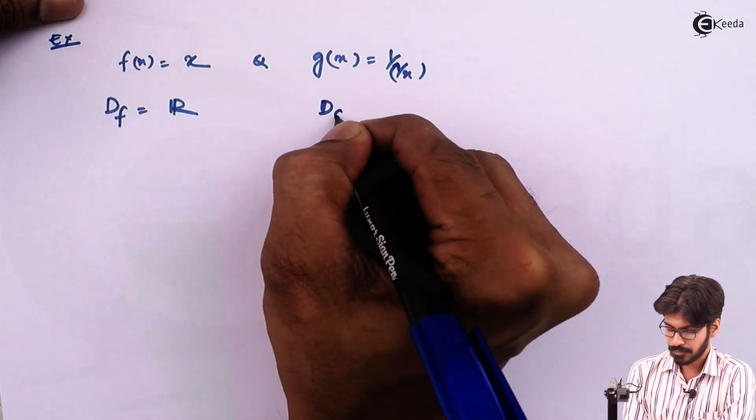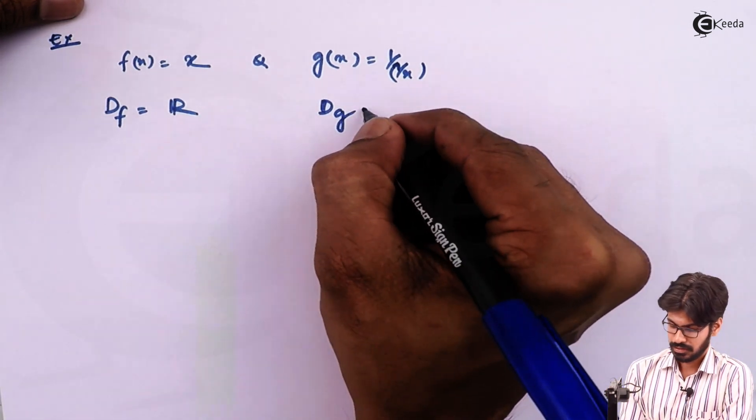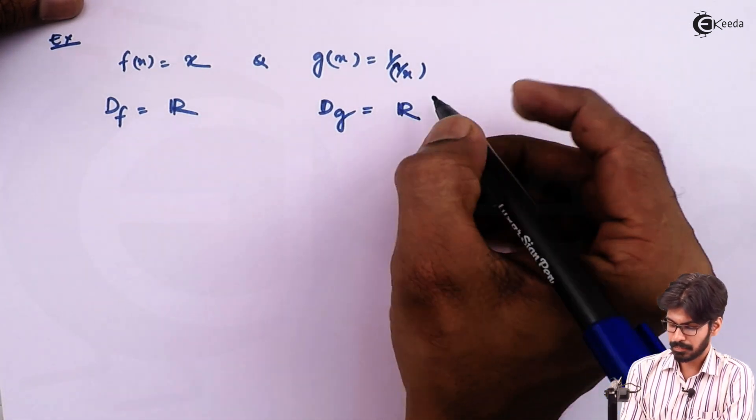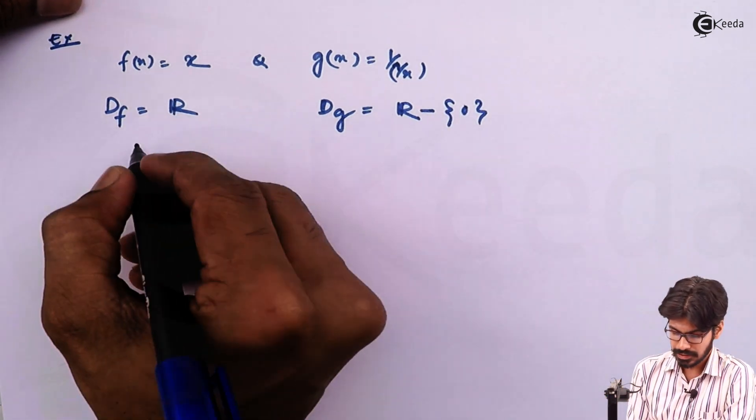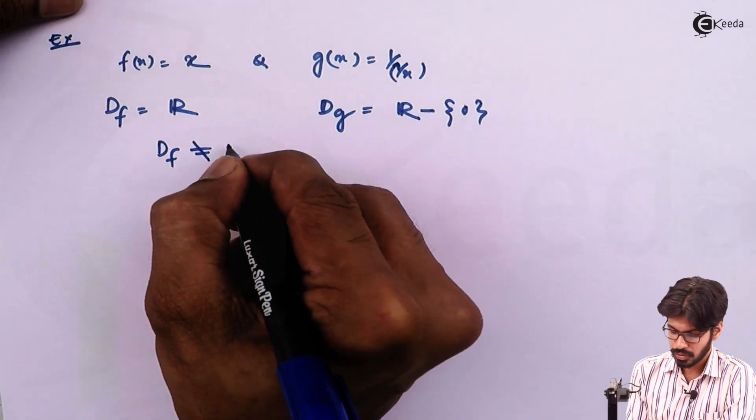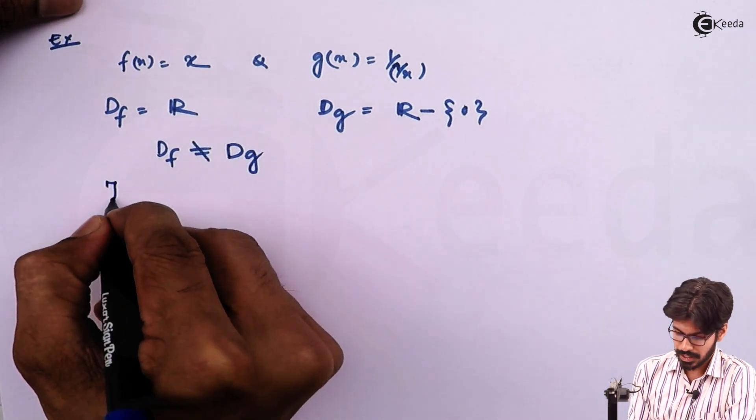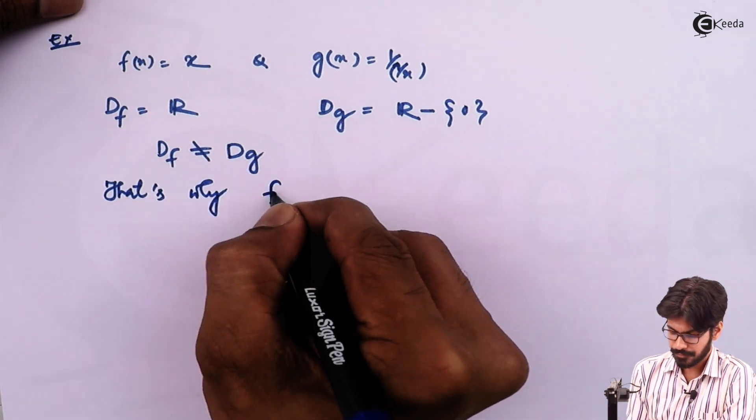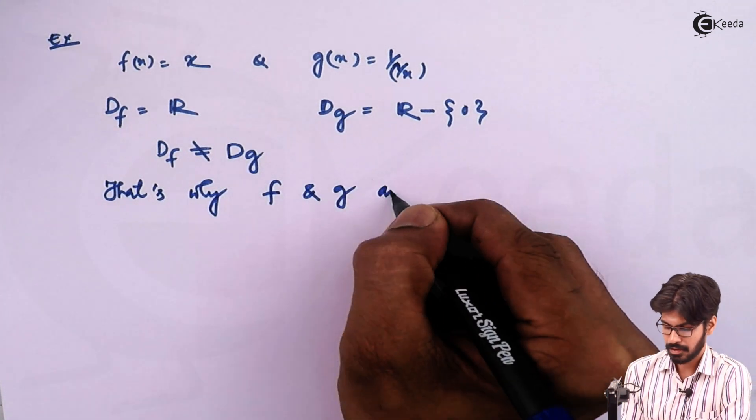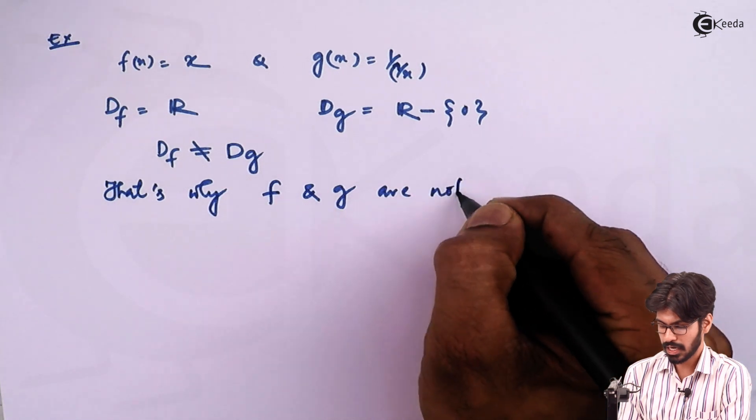But the domain of g is all the real numbers except 0. Hence here domain of f is not equal to domain of g. That's why f and g are not identical.